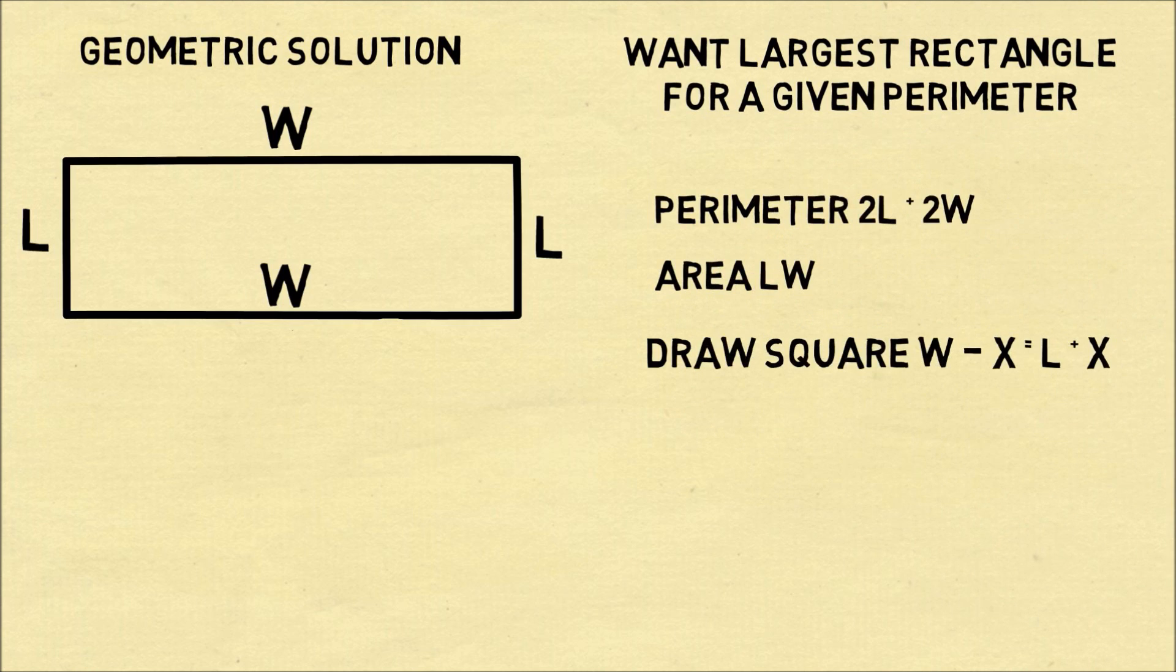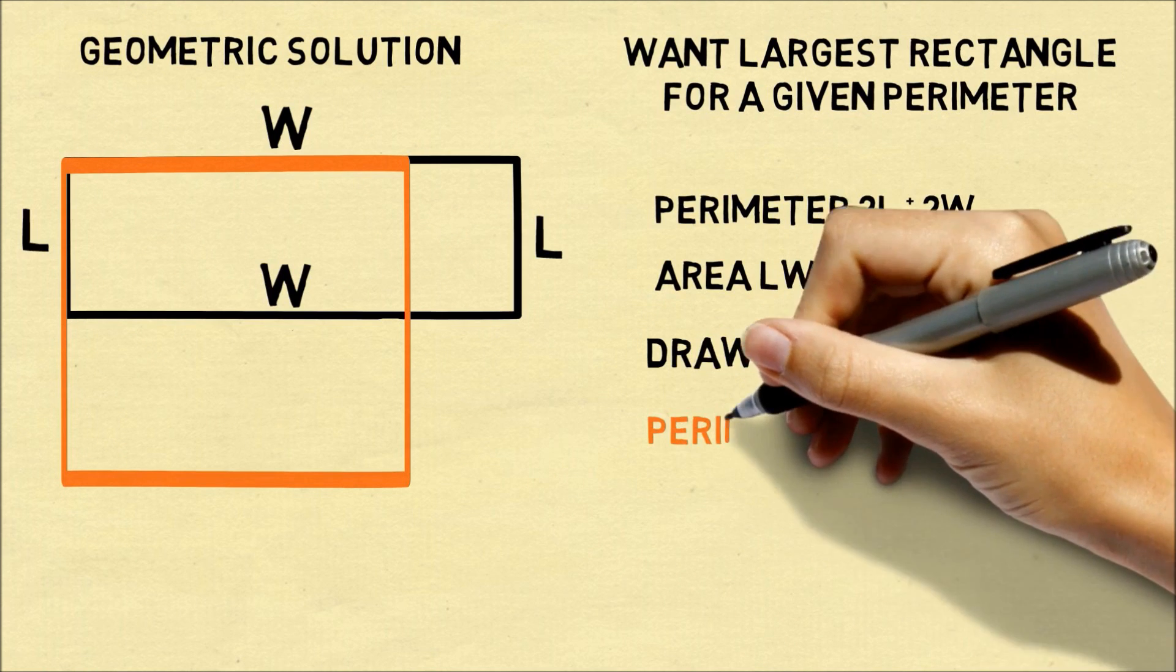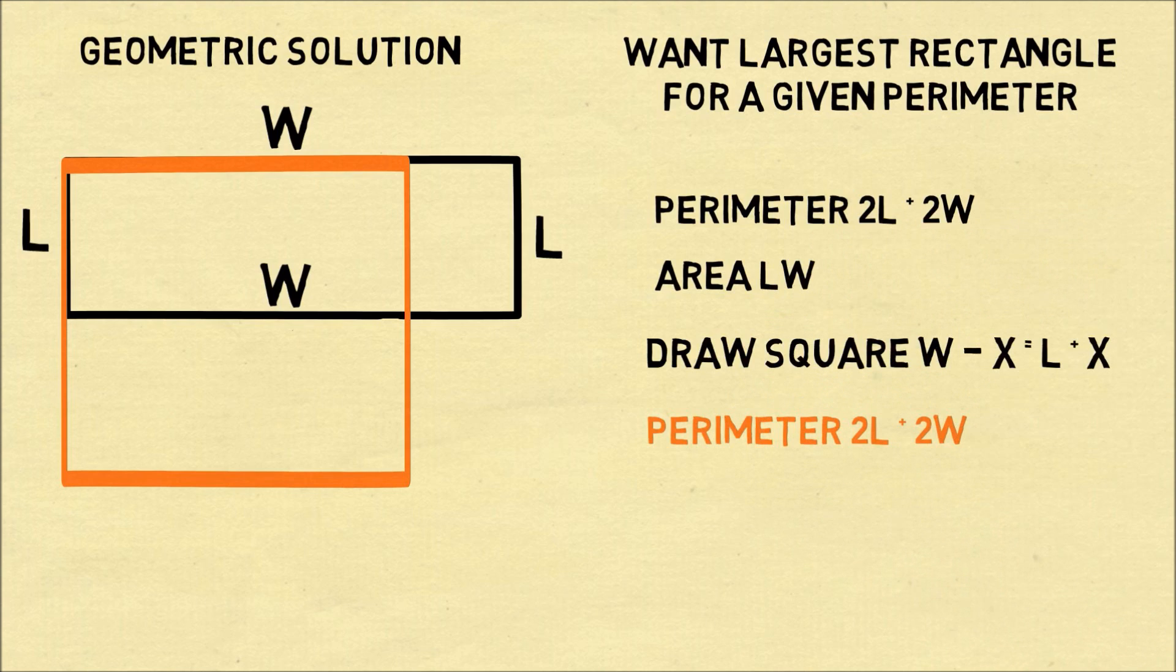So here's our solution. We're going to imagine drawing a square where the two sides are equal. So we take a little bit from the longer side and we add that to the shorter side so the two sides are equal. Now because we've removed the same distance from one side that we've added to the other, the perimeter is the same.